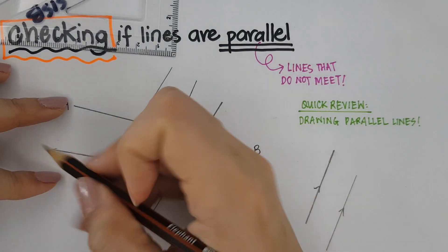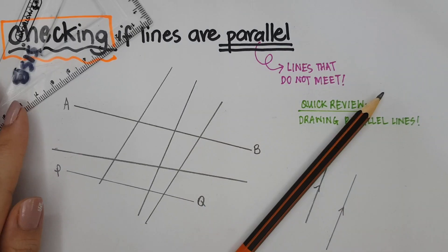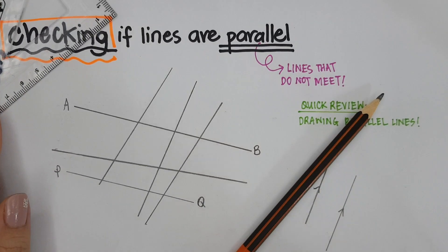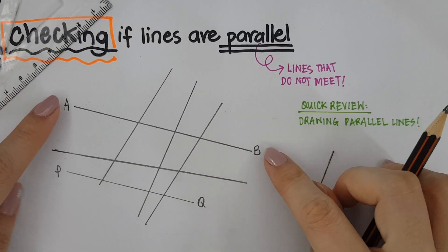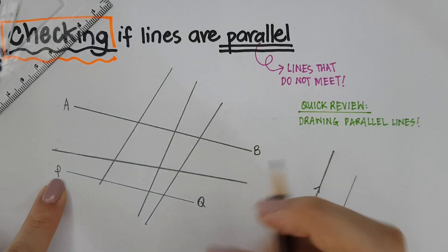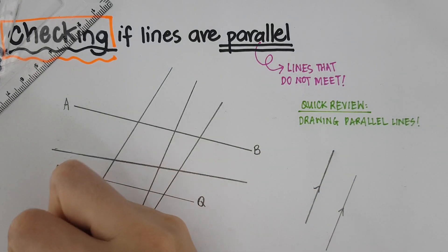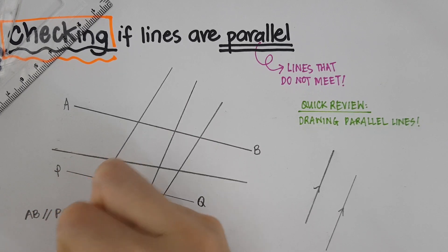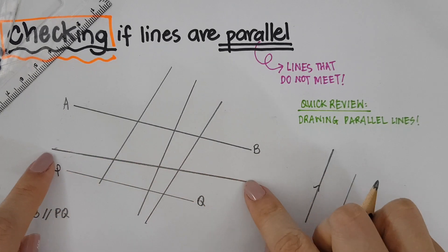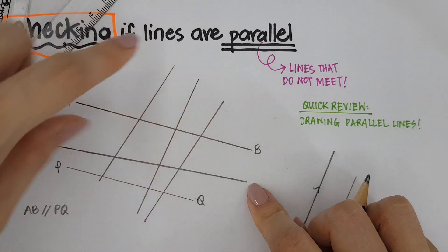You can see that it is exactly on the ruler. So these two lines are parallel, and I'm going to name it PQ. So I know that AB is parallel to PQ. Let me write that down: AB is parallel to PQ. It is not parallel to the other one.